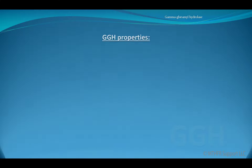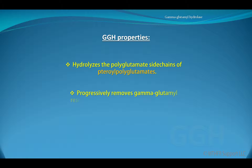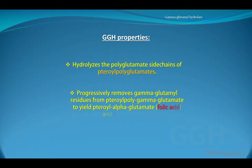GGH stands for gamma-glutamyl hydrolase. GGH hydrolyzes the polyglutamate side chains of teroyl polyglutamates. It progressively removes gamma-glutamyl residues from teroyl polygamma glutamate to yield teroyl alpha-glutamate, also known as folic acid, and free glutamate.